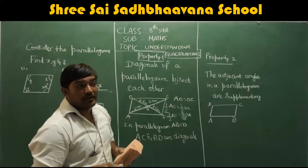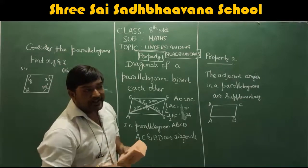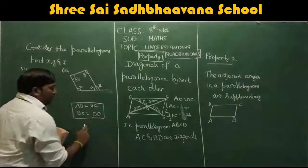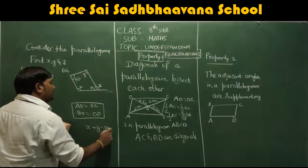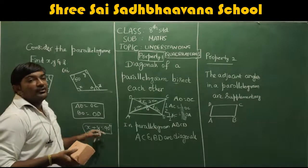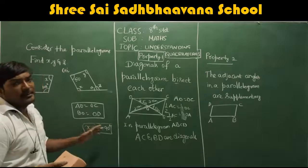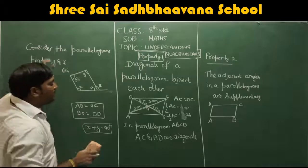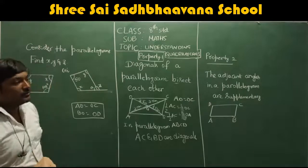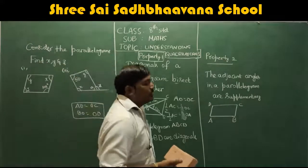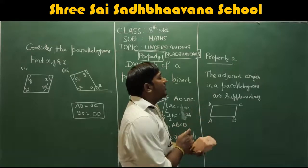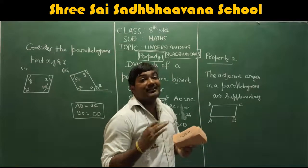You might also know complementary angles: a pair of angles whose sum is 90 degrees. For example, 45 and 45, or 55 and 35 — any pair of angles whose sum is 90 degrees are called complementary angles. You will study this in more depth in lines and angles at your next level.